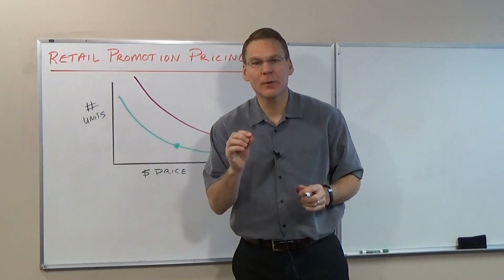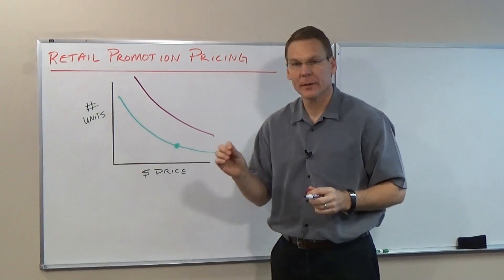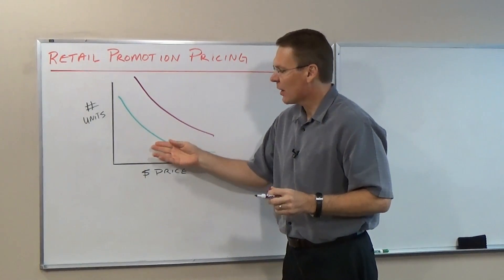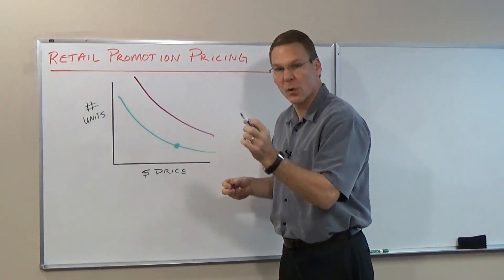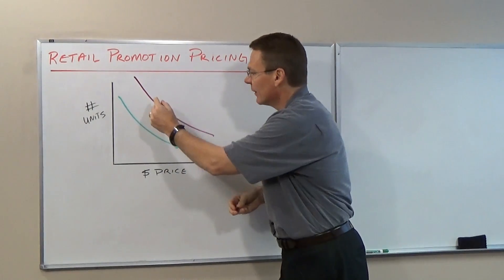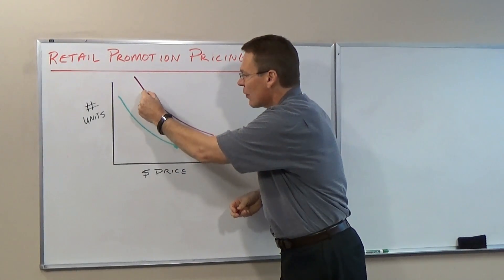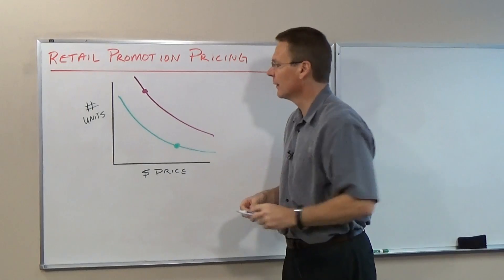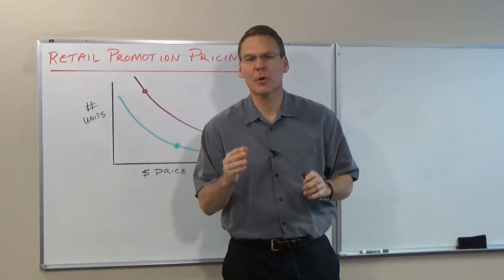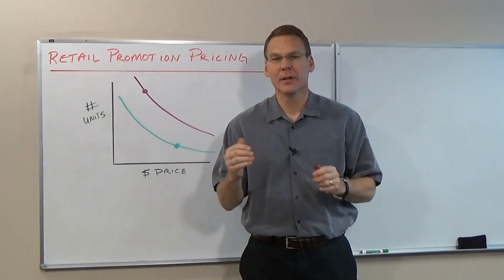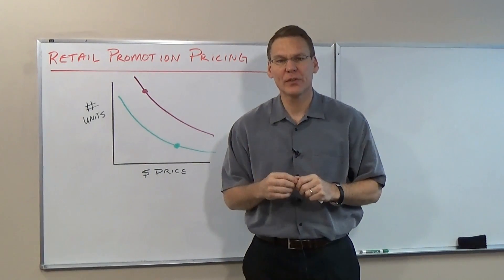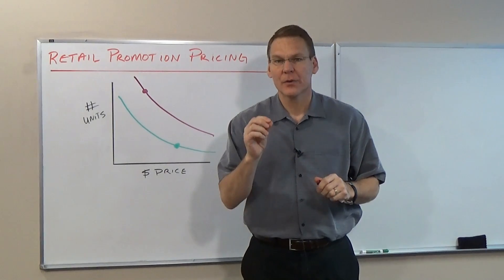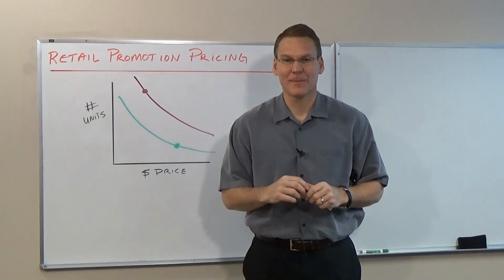When an item is promoted at a lower price, its forecast is shown here. How is a merchant to use this information to promote more effectively?